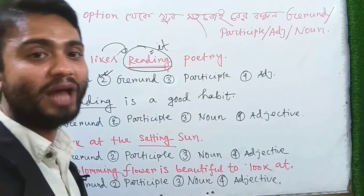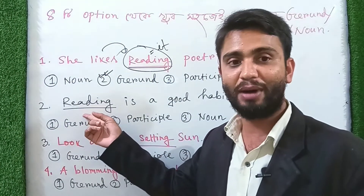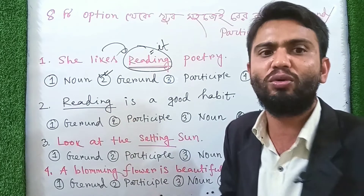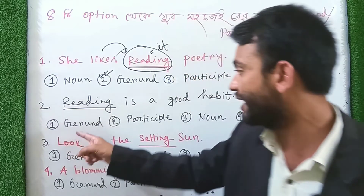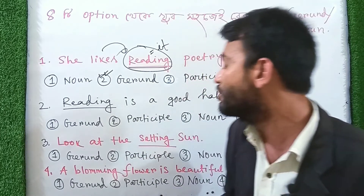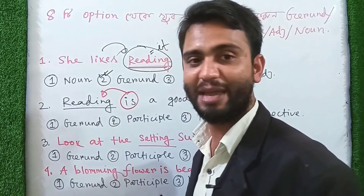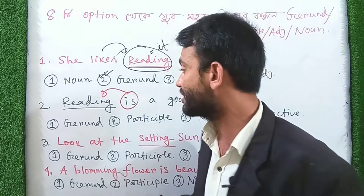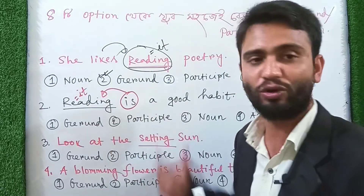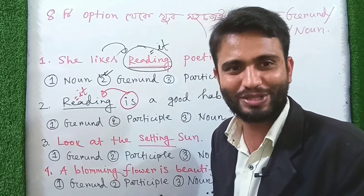The next example: Reading is a good habit. Reading is a good habit. The underlined word is a dash — parts of speech. Here 'reading' is used as the subject of the sentence. It is a good habit. You have to identify it as a gerund because it functions as a noun here.